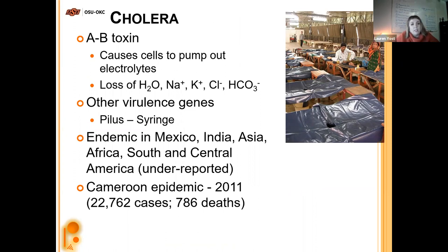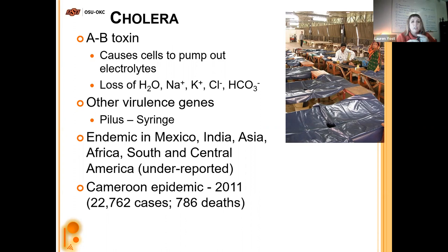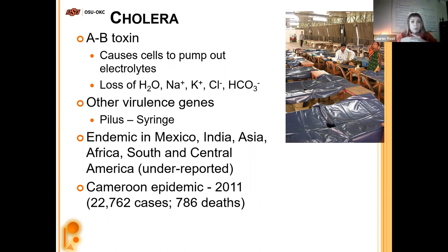The A and B cholera toxin causes cells to pump out electrolytes — water, sodium, potassium, chlorine ions, and bicarbonate, which maintains blood pH. All of this is being pumped out of the cells when it shouldn't be, affecting nerve function and the body's pH stability. Vibrio cholerae also has a pilus, hinting at horizontal transfer of genes through the sex pilus — they can connect to one another and transmit genetic material.